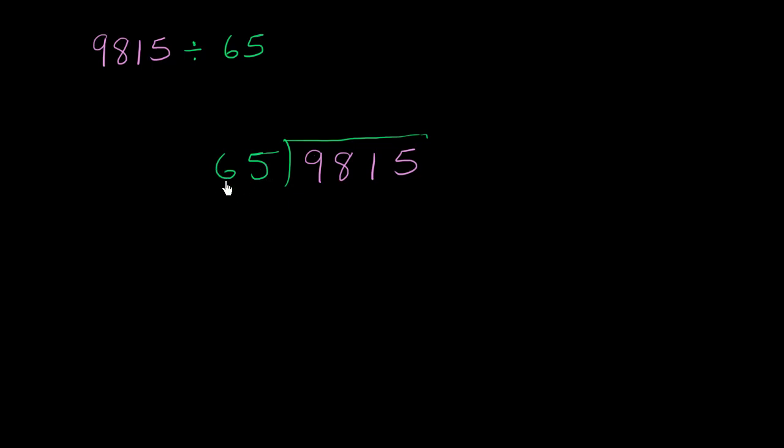So first we can think about, how many times does 65 go into 9? Well, it doesn't go into 9 at all. So we can move one digit to the right. How many times does it go into 98 without going over it? Well, 65 times 1 is 65, so that doesn't go over it. And 65 times 2, well that would be 130, so that would go over 98. So it only goes one time. We multiply 1 times 65, which is 65. And then we could subtract to see how much we have left over. So 8 minus 5 is 3, and 9 minus 6 is 3.